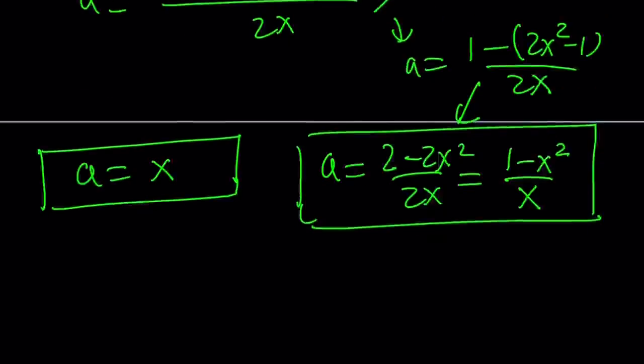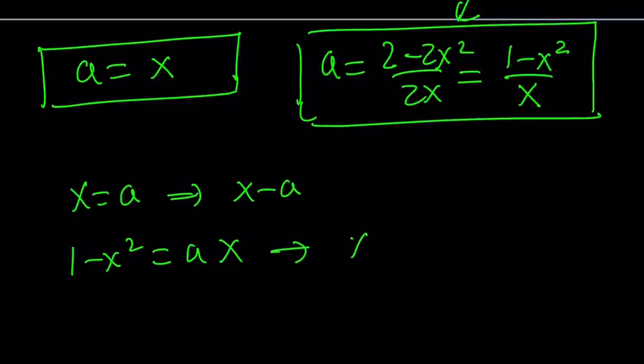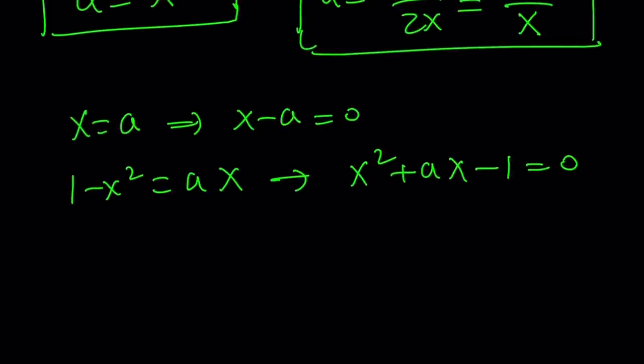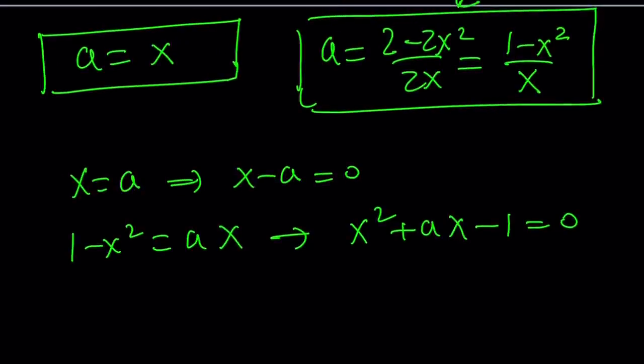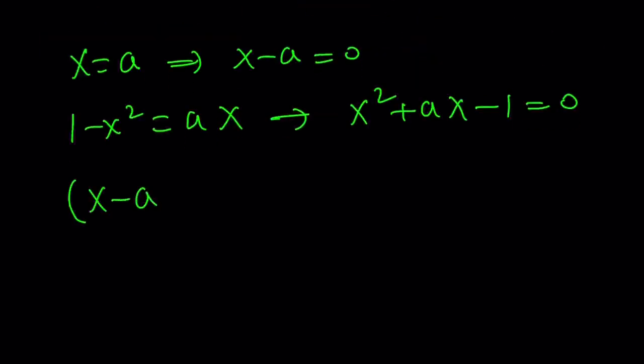So what does that mean? It just means we can reverse the process, switch roles, and write it as factored in x form. Since A equals x is a root, that means x equals A is also a root, which means x minus A is a factor. And the second one, by using cross multiplication, we can write it as x squared plus Ax minus 1 equals 0. So we basically get two solutions here, or two equations. But we can put those two together.